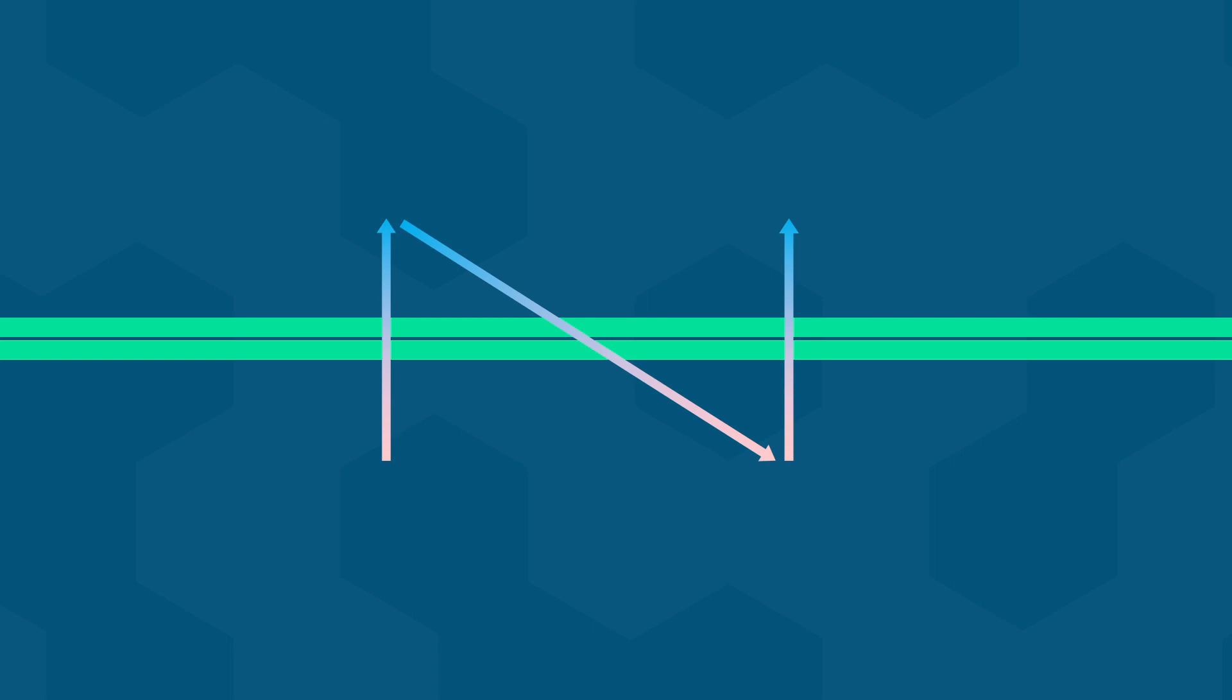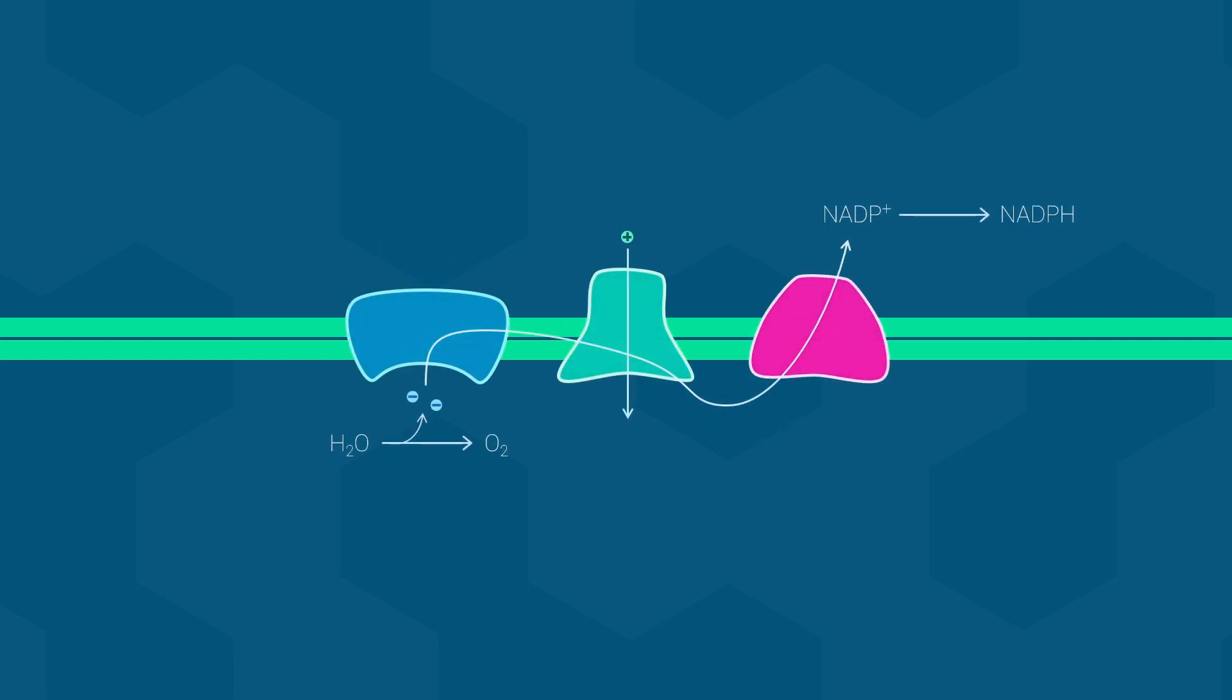Anyway, as I said a few moments ago, the electrons leaving photosystem II lose potential energy as they move down the chain, and this is used to move protons across the membrane. Protons are also released by the oxidation of water in the very first step. This means that protons are accumulating on one side of the thylakoid membrane and creating, you guessed it, an electrochemical gradient.